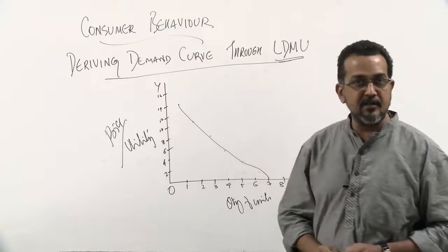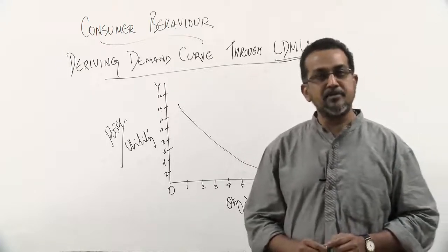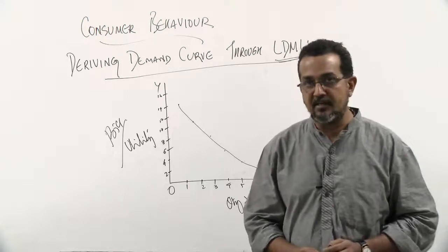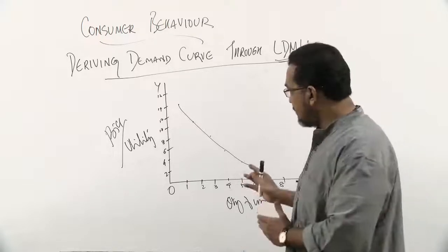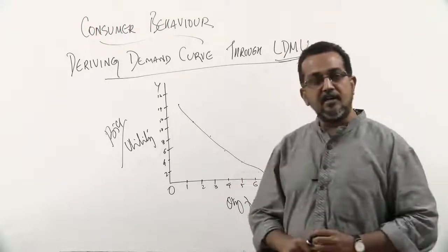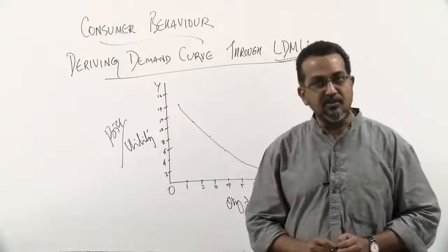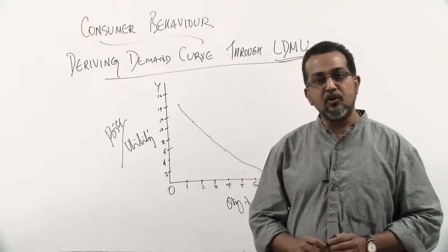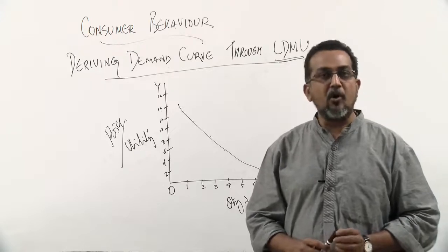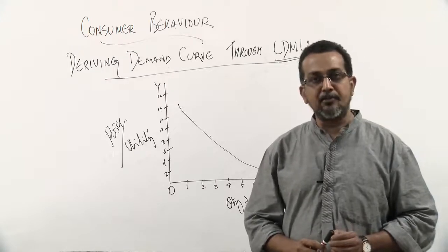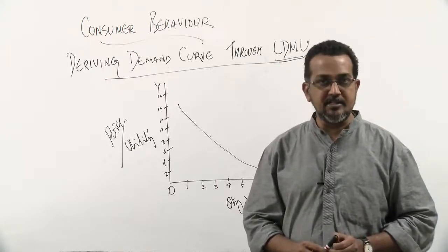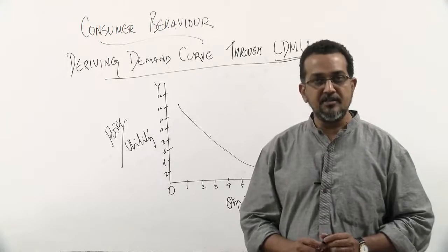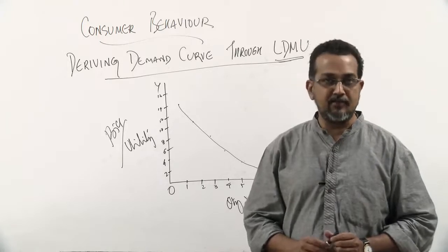The application of the law of diminishing marginal utility in the derivation of the demand curve is an important area. Having finished this discussion, we shall next go to the ordinal approach to utility — the ordinal theory of consumer behavior.